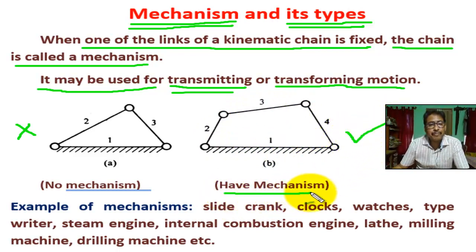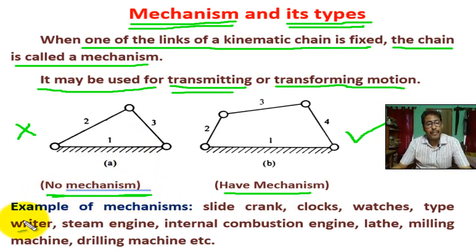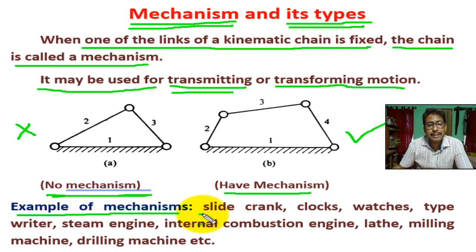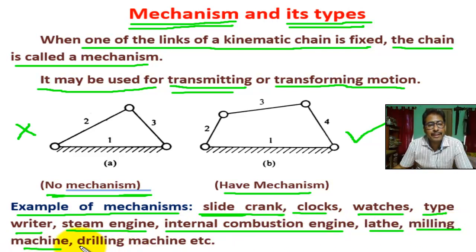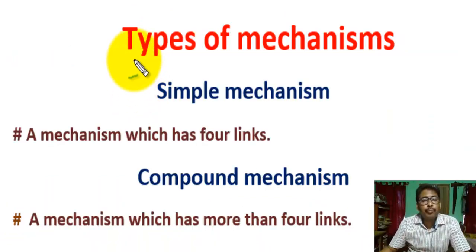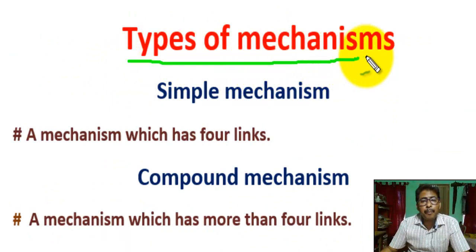Examples of mechanisms include: slide crank, clocks, watches, typewriter machines, steam engines, internal combustion engines, lathe machines, milling machines, drilling machines, and so on. Now, what are the types of mechanism?